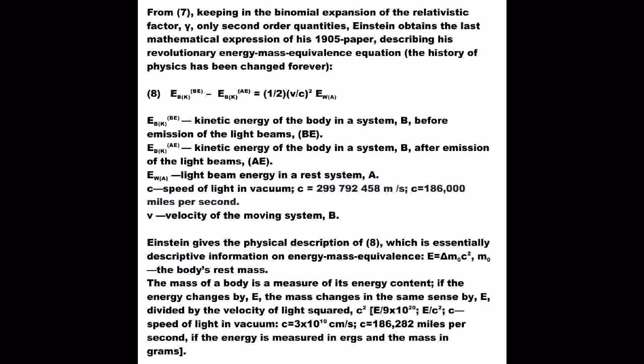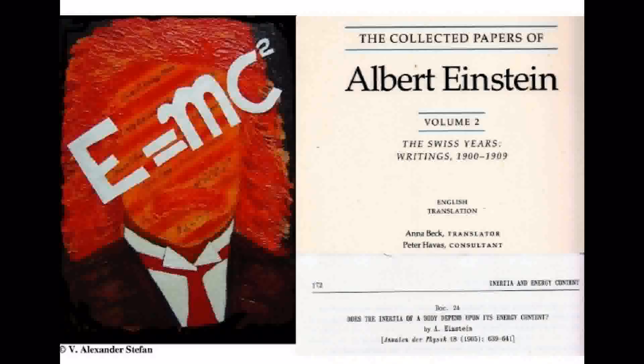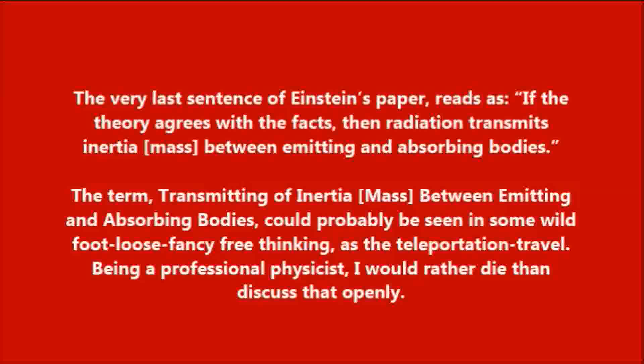Einstein gives the physical description of expression 8, which is essentially descriptive information on energy-mass equivalence: the mass of a body is a measure of its energy content; if the energy changes by E, the mass changes in the same sense by E divided by the velocity of light squared. The very last sentence of Einstein's paper reads: 'If the theory agrees with the facts, then radiation transmits inertia — mass — between emitting and absorbing bodies.'